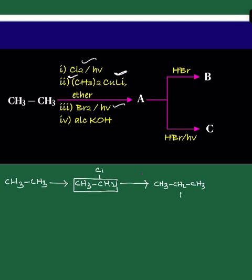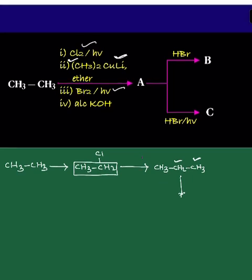You have primary hydrogens and secondary hydrogens. Secondary hydrogens are much more reactive when compared to primary hydrogens. As a result, you will get isopropyl bromide, or 2-bromopropane. Then it is treated with alcoholic KOH.